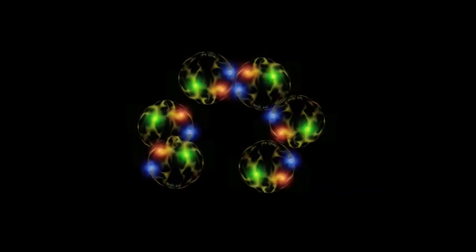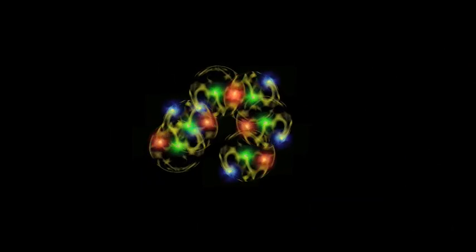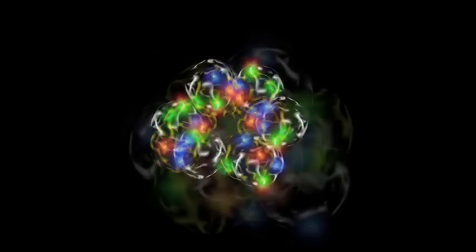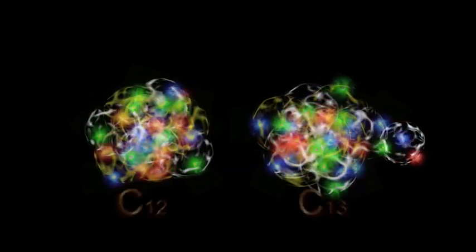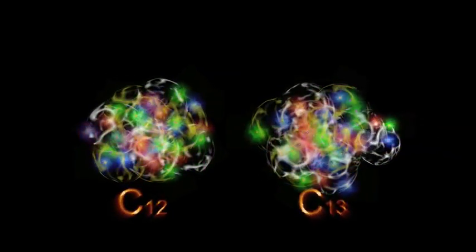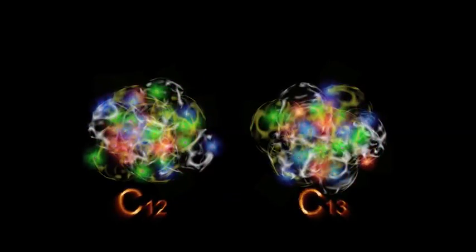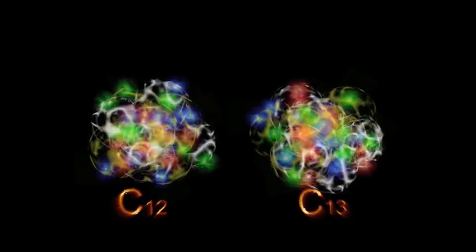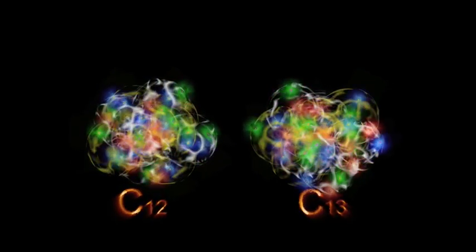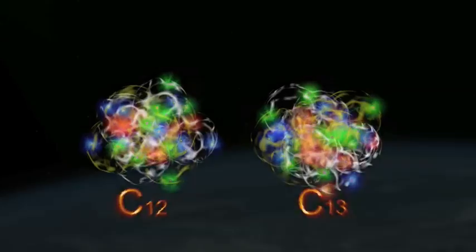The nucleus of a typical carbon atom has six protons and six neutrons. But about one carbon atom out of every hundred has one extra neutron. This has very little effect on the properties of the carbon other than making it slightly heavier. Chemically, it acts just like any other carbon atom. It is called carbon-13.